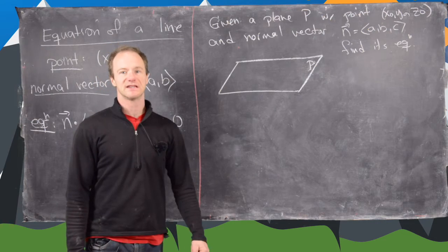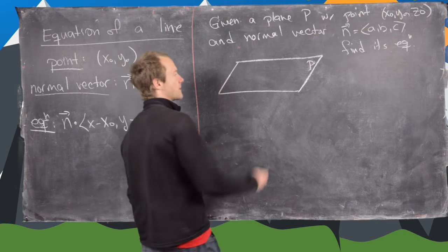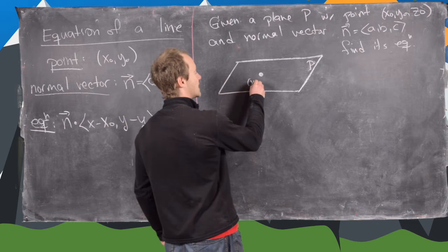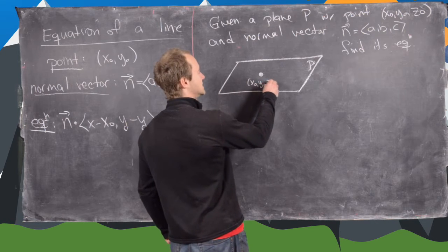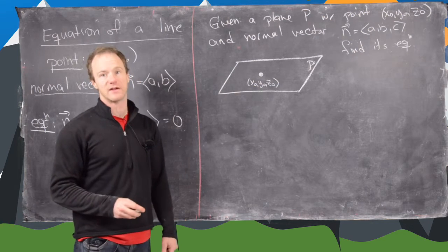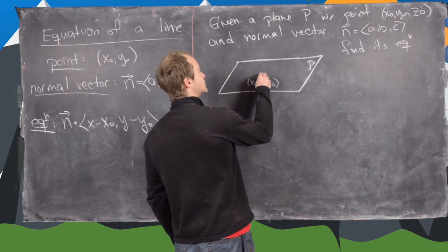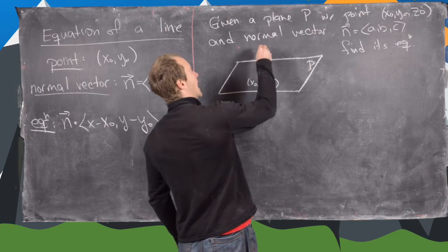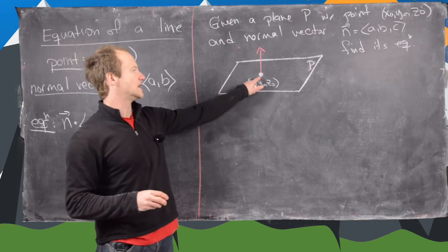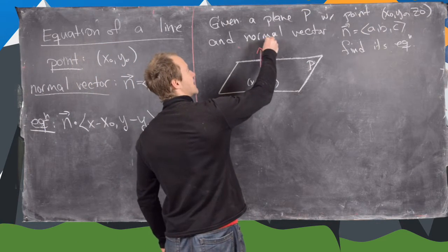We'll do this exactly like we did for a line. I've sketched out the plane here and we know this point right here — maybe we'll say this is the point x-naught, y-naught, z-naught — is a point on the plane. That's given. And then we also know that if we take the vector which we know is normal to the plane and put its initial point right there, we can have this type of picture.